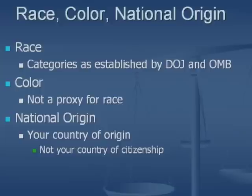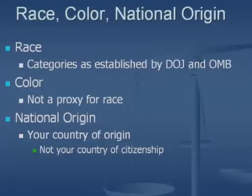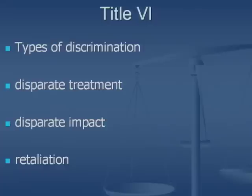What do we mean by the terms race, color, and national origin? There are five basic categories established by the Department of Justice and the Office of Management and Budget for race: white or Caucasian not of Hispanic origin; black or African American not of Hispanic origin; Hispanic; Asian and Pacific Islander; and Native Alaskan and Native American. The second basis, color, is not a proxy for race — it is the color of your skin. And the third basis, national origin, is your country of origin or country of ancestry — it's not your country of citizenship.